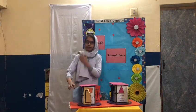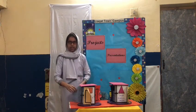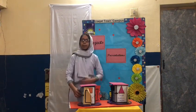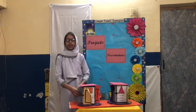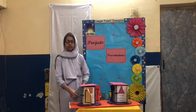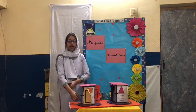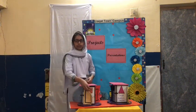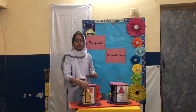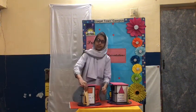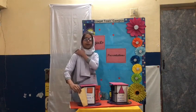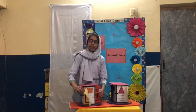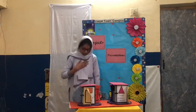For area of rectangle we use L multiply B. For perimeter of rectangle we use 2(L plus B). For area of square we use A square. For perimeter of square we use 4A. Thank you.